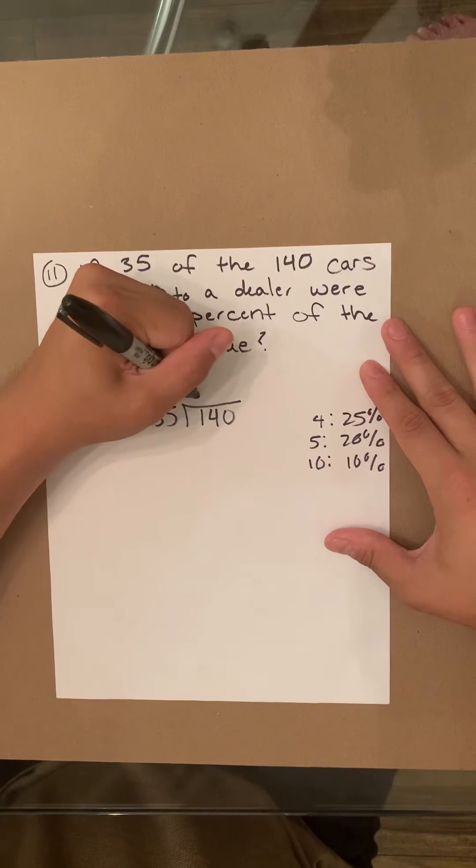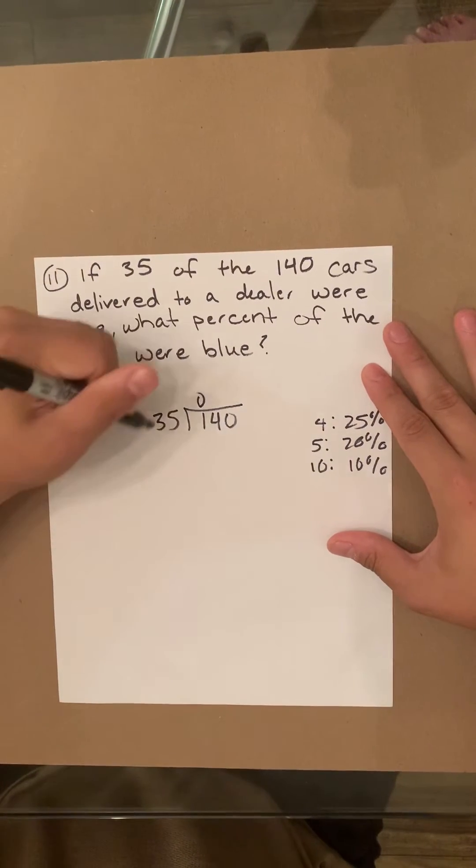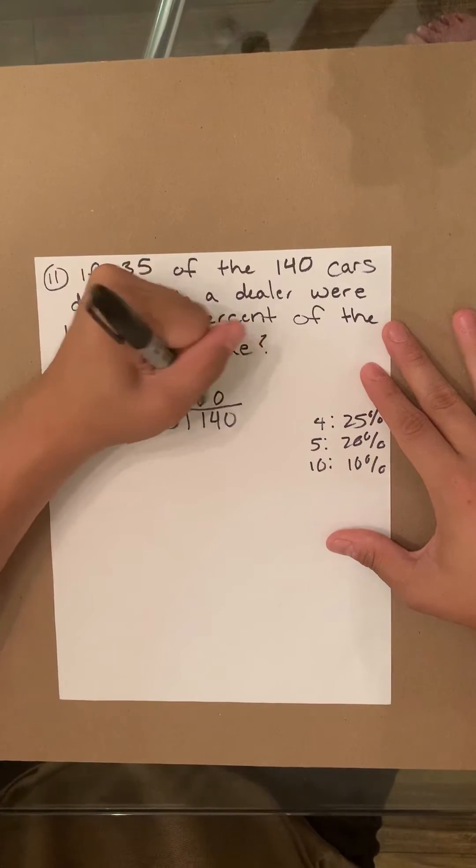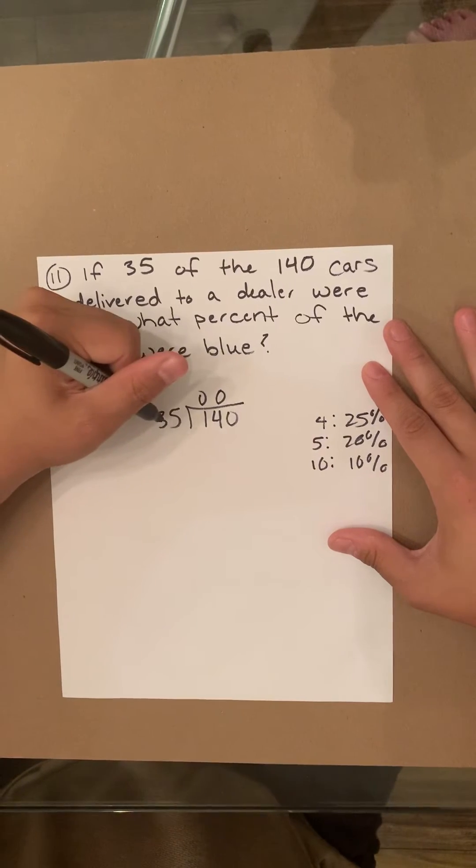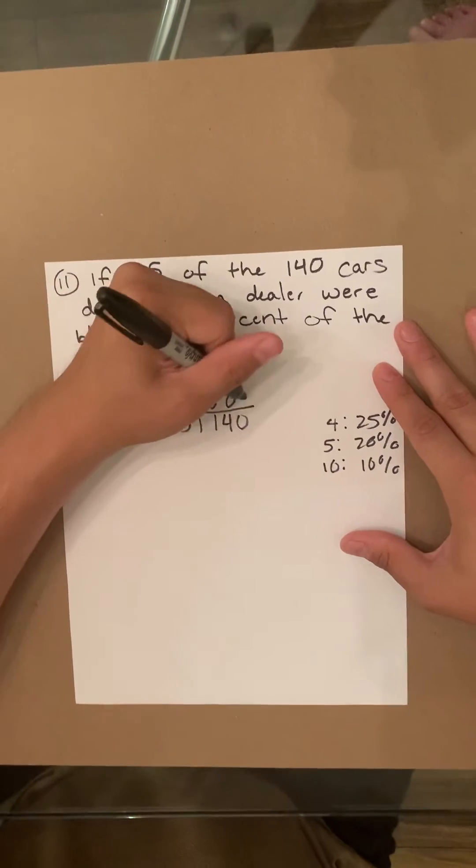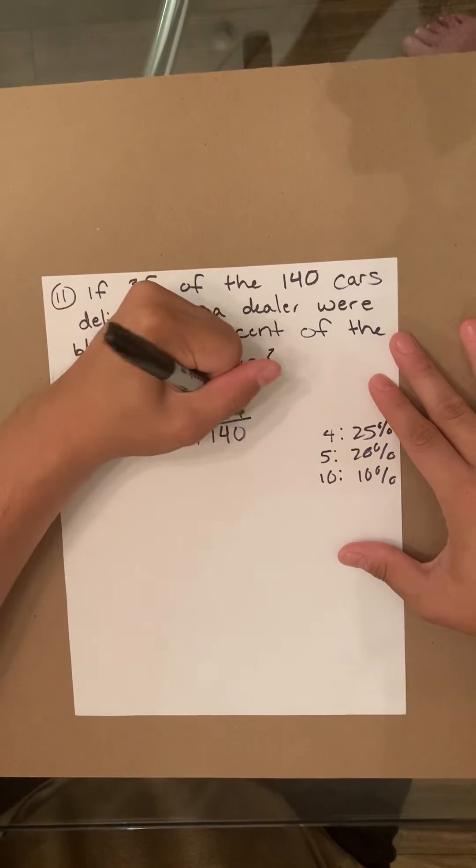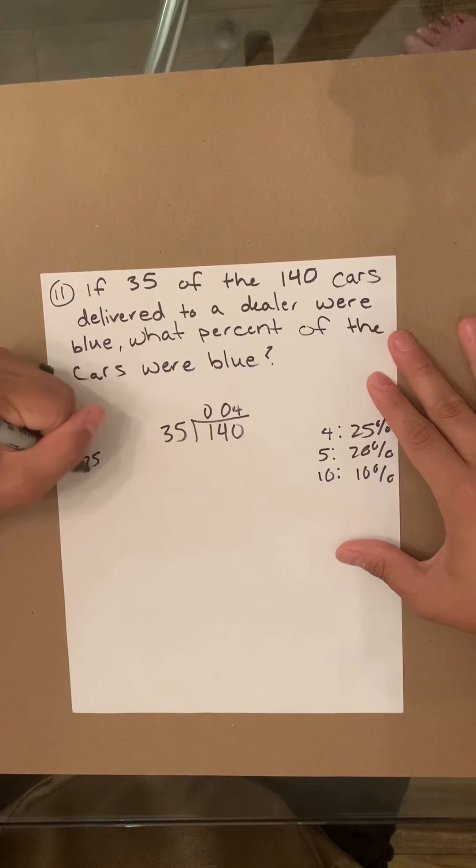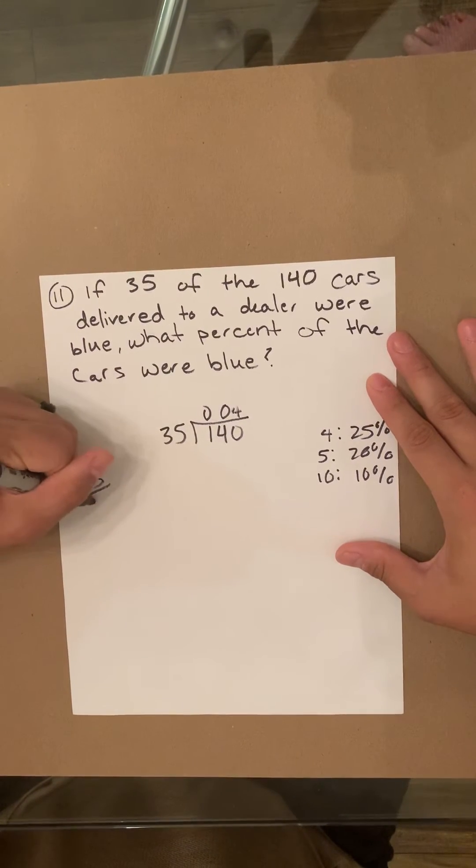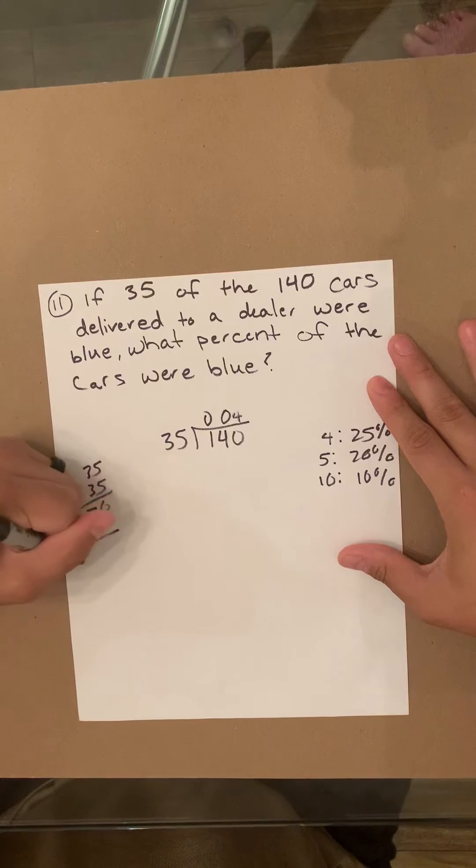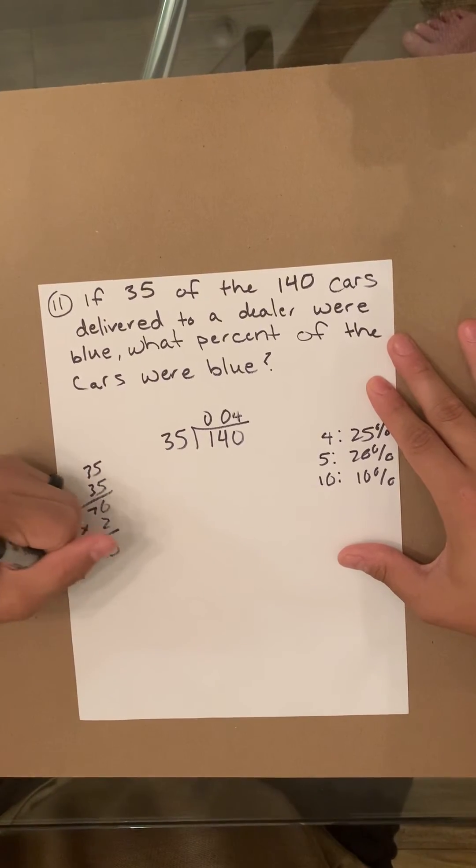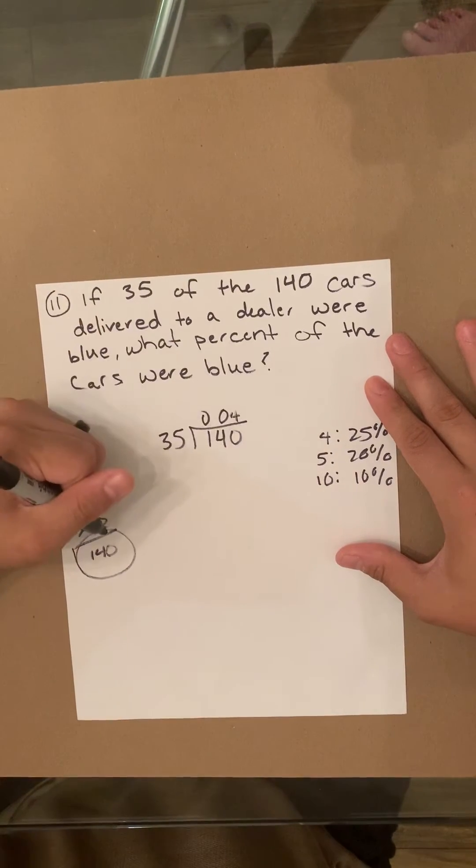This can't go into one, so you'll put a zero. 35 can't go into 14, so you'll put a zero. So it's going to be 35 divided by 140, the total, right? You're going to put four because 35 plus 35 is 70 times 2 equals 140. We can tell it's by four, right?